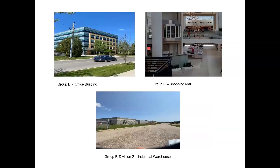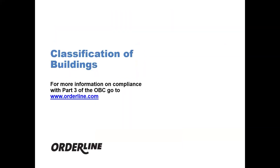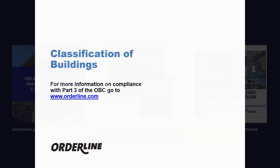The next slide shows a Group D Office Building, a Group E Shopping Mall, and a Group F, Division II, Industrial Warehouse. These are examples of the occupancy classifications in the Building Code. For more information on OBC requirements, please refer to www.oberline.com. Thank you.